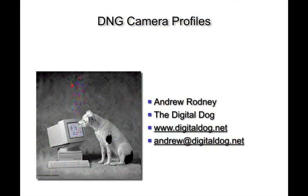We're approaching the 30-minute mark and hopefully this video tutorial was useful. Hopefully it dismissed some of the misconceptions about DNG camera profiles. If you don't have a Macbeth color checker, I very much recommend that you purchase a Passport from X-Rite — it has a lot of other functions besides just building DNG camera profiles, including very good targets for white balancing. If you have any questions and comments, I'd love to hear them. Here's my webpage and email address — thank you very much.